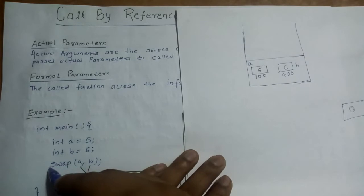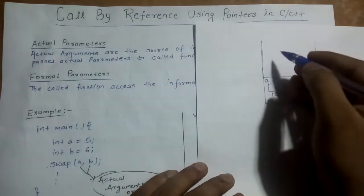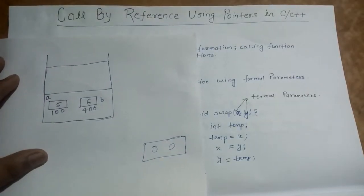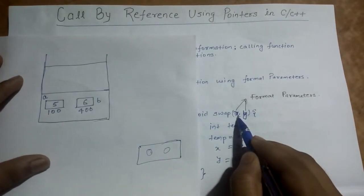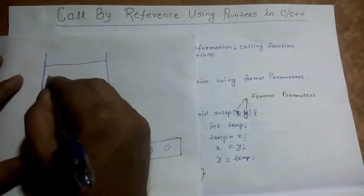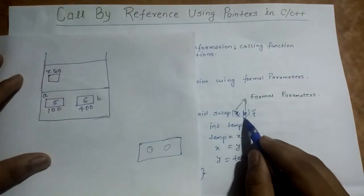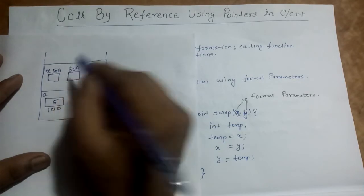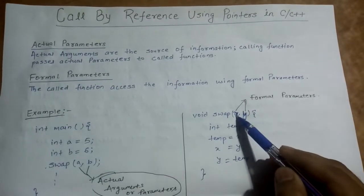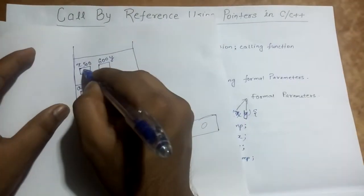Now, at this line, we invoke the swap function passing it the values of A and B. So the control goes to the swap function, and another local block will be created for its execution. Formal parameters are local variables for a function. We have local variable X — it will be allocated a space in this block, let's say address 500 — and Y, let's say address 600. Since C follows call by value, X will take the value of A, so X will become 5, and Y will become 6.